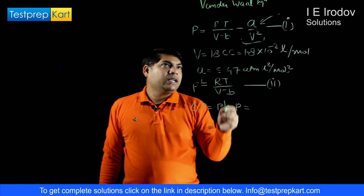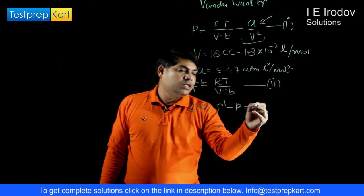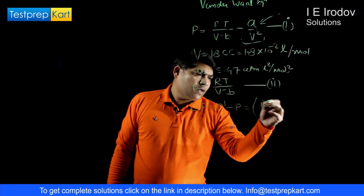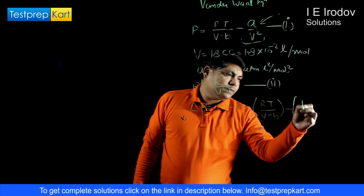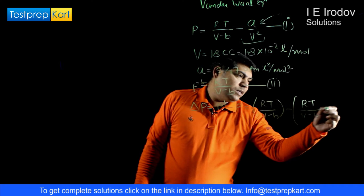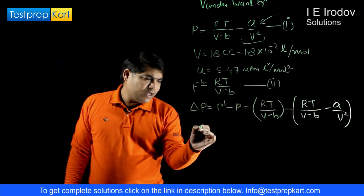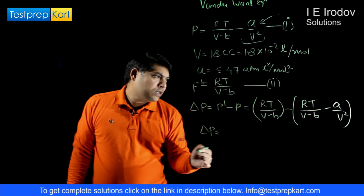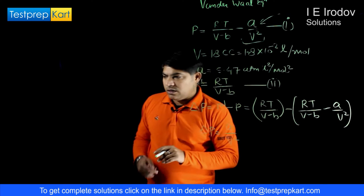From the two expressions, RT/(V minus b) is common in both terms. Writing them out: ΔP = RT/(V−b) − [RT/(V−b) − a/V²]. So the change in pressure equals a over V squared.